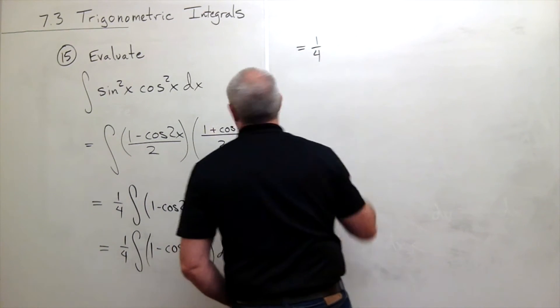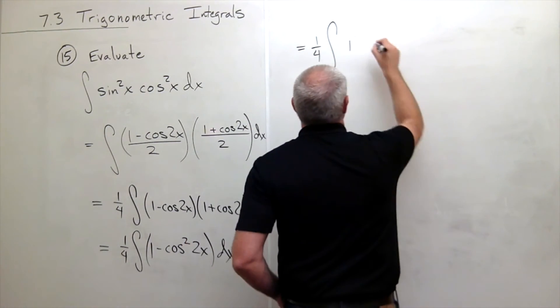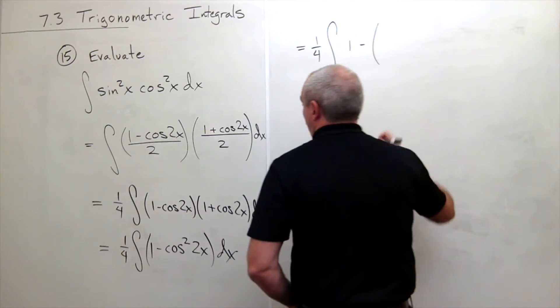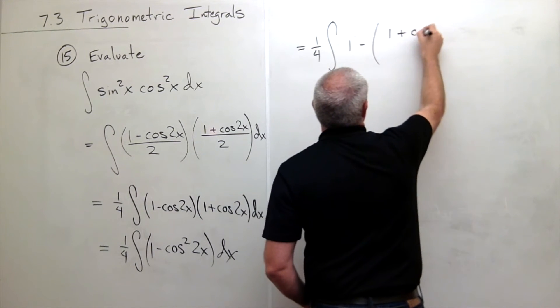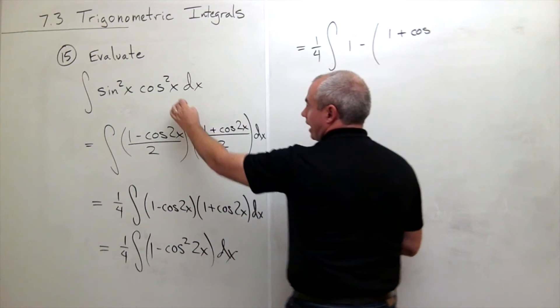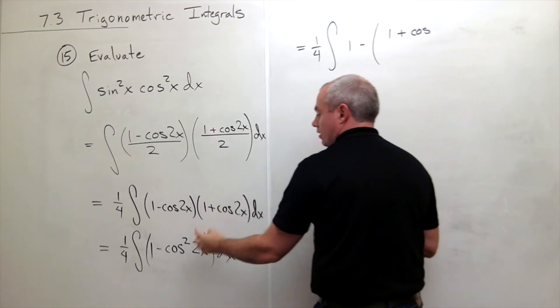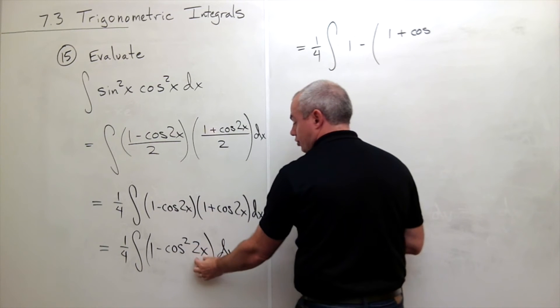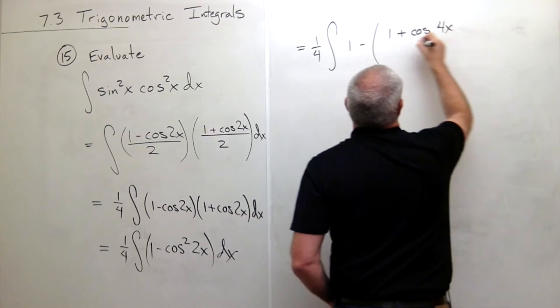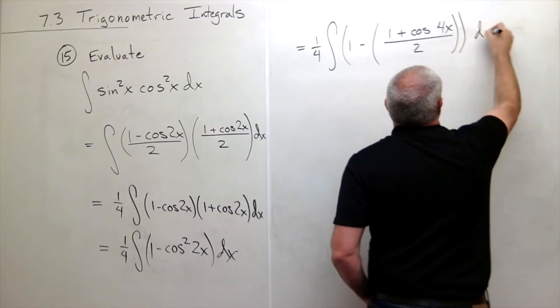I still have the 1 fourth times the integral of 1 minus, and now using half angle identity for cosine, I get that this should be 1 plus cosine of double this angle. So when I do a half angle identity of cosine squared of 2x, I double the 2x to get a 4x over 2, all of that dx.